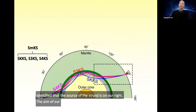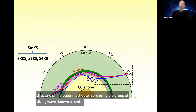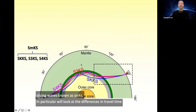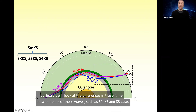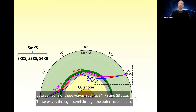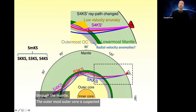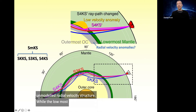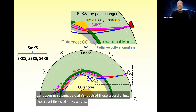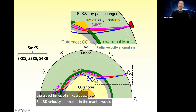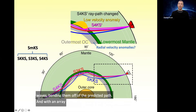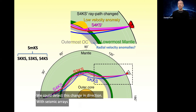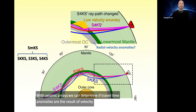The aim of our collaborative project is to determine the structure of the outermost outer core using the group of seismic waves known as SMKS. In particular, we'll look at the differences in travel time between pairs of these waves, such as S4KS and S3KS. These waves travel through the outer core but also through the mantle. The outermost outer core is suspected to contain unmodelled radial velocity structure, while the lowermost mantle is known to contain localised variations in seismic velocities. Both of these would affect the travel times of SMKS waves, but 3D velocity anomalies in the mantle would also refract waves, bending them off of the predicted path. With an array, we'd be able to detect this change in direction. With seismic arrays, we can determine if travel time anomalies are the result of velocity anomalies in the outermost core or in the lower mantle.